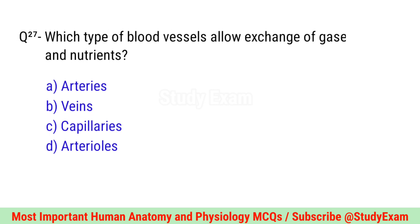Question number twenty-seven. Which type of blood vessels allow exchange of gases and nutrients? Correct option is C. Capillaries.